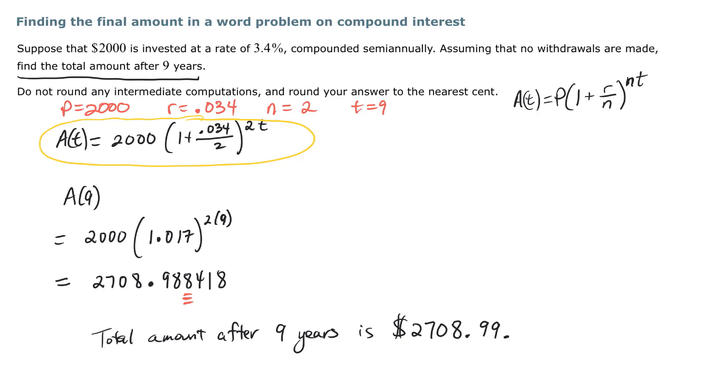The total amount after 9 years is $2,708.99. That's a return of $708.99 — pretty good.